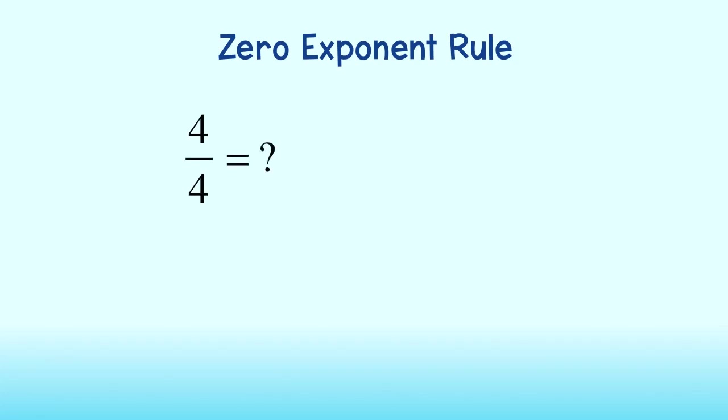We know any number divided by itself is 1. However, let's back up a second. How do we write this fraction using exponential notation? Well, any number raised to the first power is itself. We could rewrite 4 fourths as 4 to the first over 4 to the first.